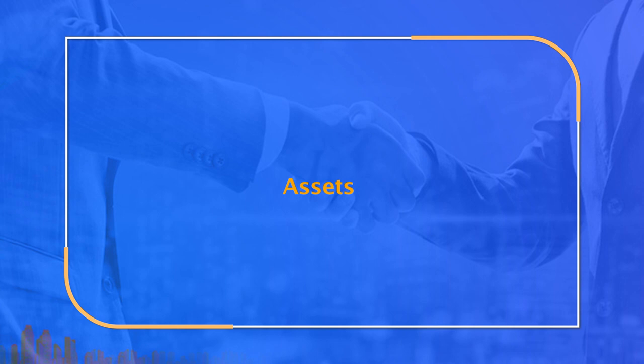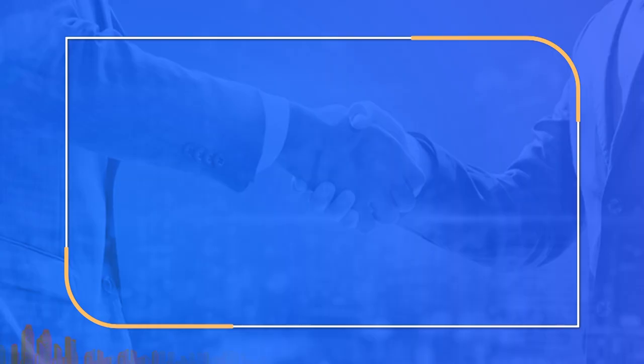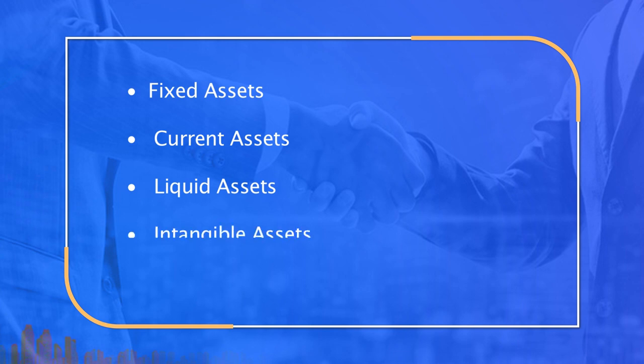These terms include assets. Assets are the properties a business owns for the smooth conduct of its affairs. There is a broad classification of assets: number one — fixed assets; number two — current assets; number three — liquid assets; number four — intangible assets; number five — fictitious assets.